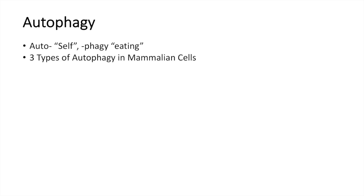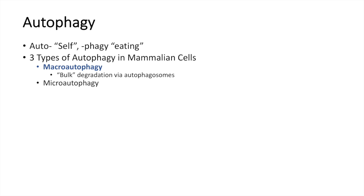There are actually three types of autophagy in mammalian cells. The first one is the one I'm going to talk to you guys about in this video: macroautophagy, which is simply the bulk degradation of different cellular components via autophagosomes. The other types include microautophagy and chaperone-mediated autophagy, and I'll talk about those in another video.